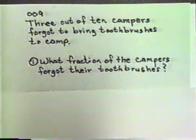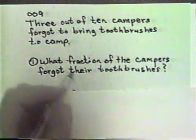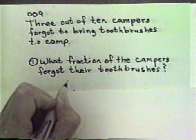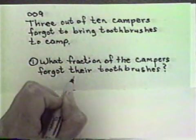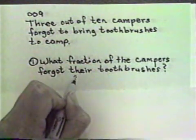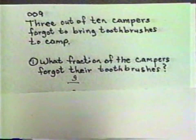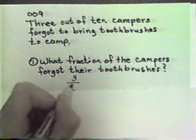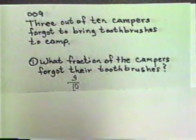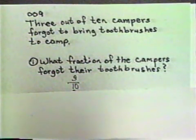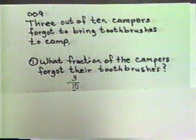So, what fraction of the campers forgot to bring their toothbrushes? Well, three of them forgot, so three out of a total of ten. Ten represents the whole number of campers and three of the ten forgot to bring their toothbrushes. So it's three-tenths.